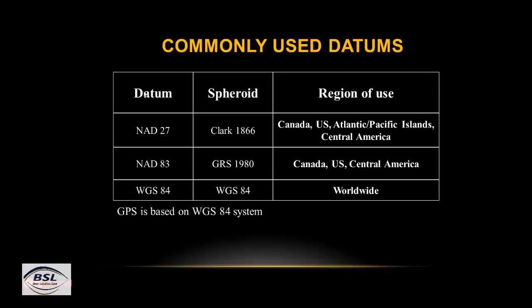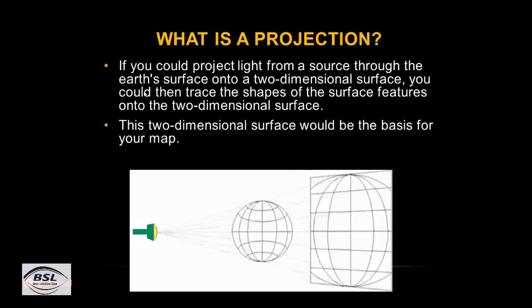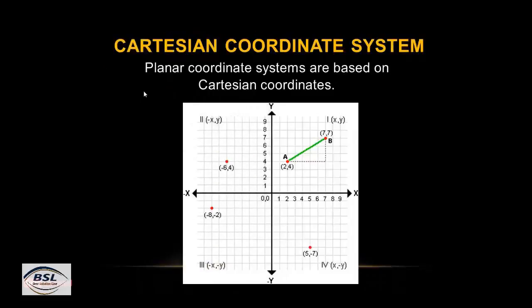What is projection? If you project light from a source through the earth's surface onto a two-dimensional surface, you can trace the shape of surface features onto that flat surface. This two-dimensional surface forms the basis for your maps. You can see that light on the globe is transferred to a flat earth surface — this is map projection, a conversion from 3D to 2D.